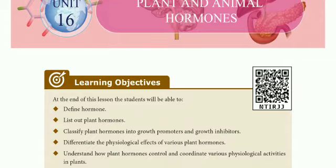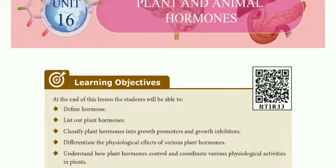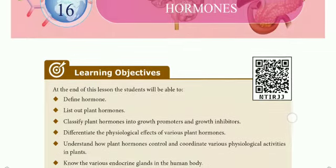Another objective is to identify the different physiological effects of various plant hormones. We will learn how each of the five types of hormones affects the plant. For example, if we apply a hormone to a plant, it will grow in a particular way. This is the physiological effect of various plant hormones — there are effects for all five types of hormones.